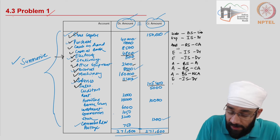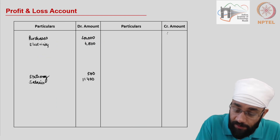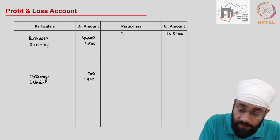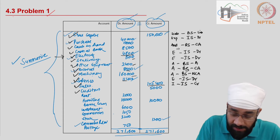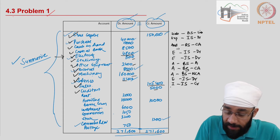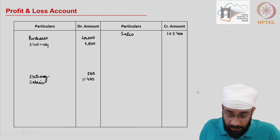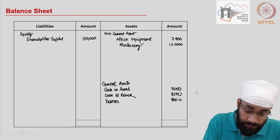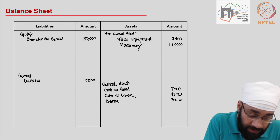Then you have sales 105,400. Sales is an income; it goes to the income statement on the credit side — 105,400. Next up is creditors 5,000. Creditors are a liability in the balance sheet under the current liabilities head — so 5,000 creditors under current liabilities.